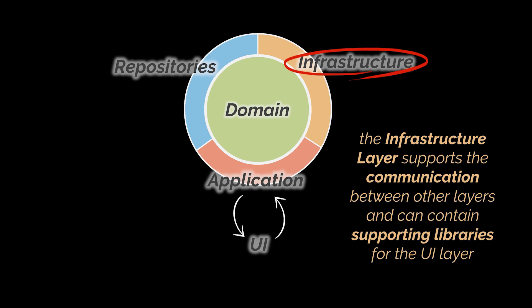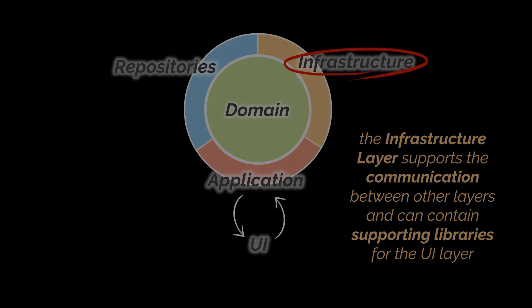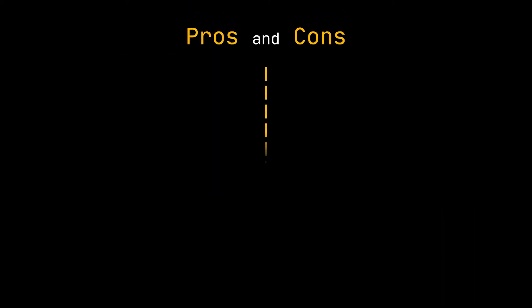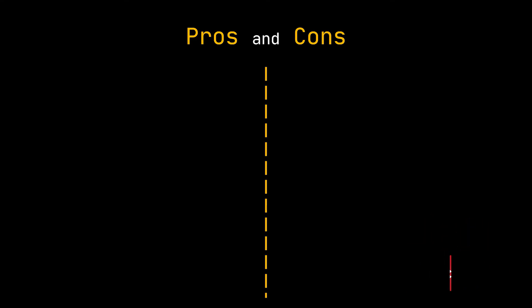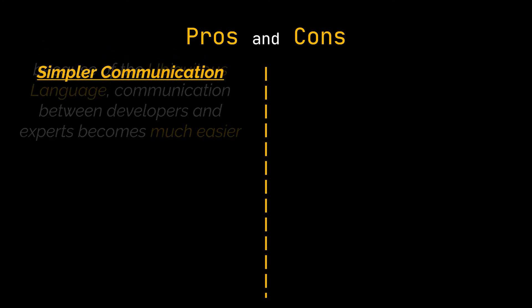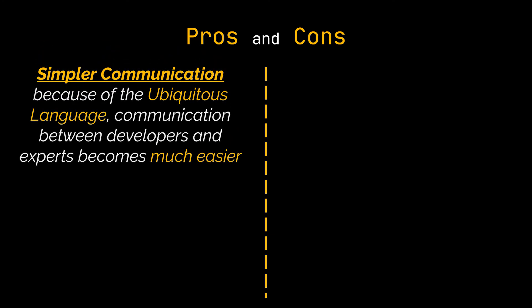Finally, the infrastructure layer supports communication between other layers and can contain supporting libraries for the UI layer. I don't want to throw more information at you, as what we've covered so far can already be overwhelming. I'll end this video with a few last words about DDD pros and cons — let me know in the comments below if you'd like a part 2 diving deeper into domain-driven design. One of the main advantages of DDD is simpler communication: thanks to the ubiquitous language, communication between developers and experts becomes much easier.